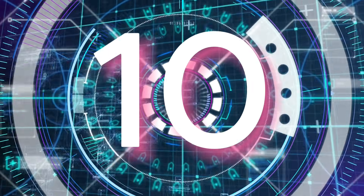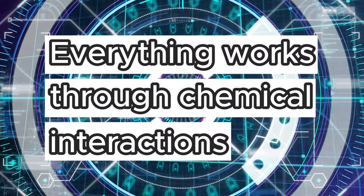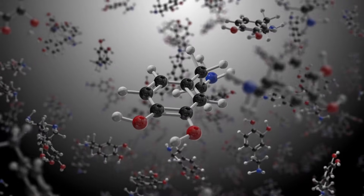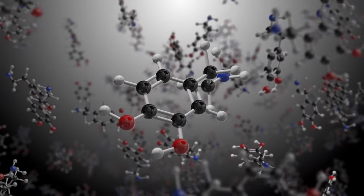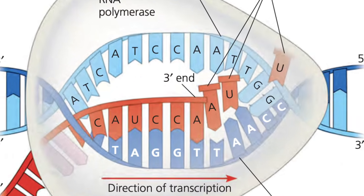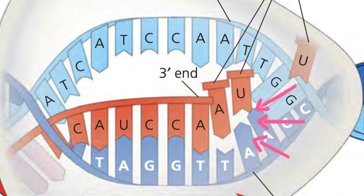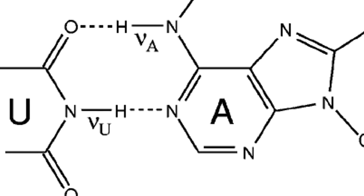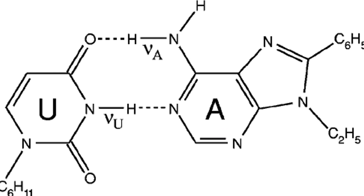Coming in at number 10 is: everything works through chemical interactions. While this might seem like an obvious fact, one thing that we have to be careful about in biology is thinking that things just happen. One specific example of this is transcription. During transcription, it's so easy to fall into the trap of thinking that RNA polymerase simply knows to place a uracil against an adenine. But in reality, the only reason that this matching happens at all is because uracil and adenine have those corresponding structures to form those two hydrogen bonds.